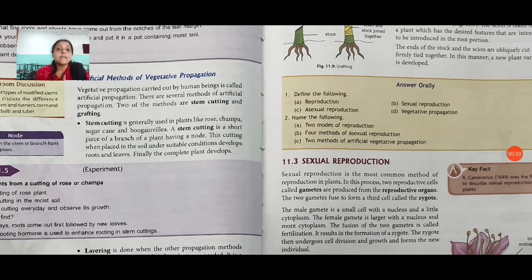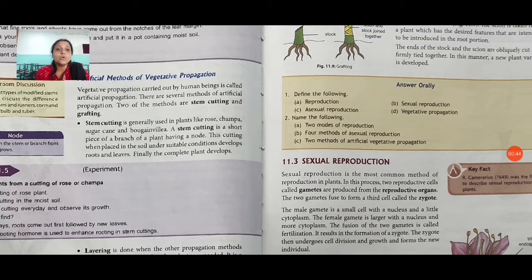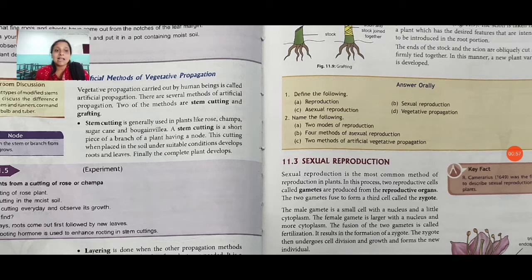The male gamete is a small cell with a nucleus and little cytoplasm. The female gamete is large, with a nucleus and more cytoplasm. The fusion of the two gametes is called fertilization, which results in the formation of a zygote. The zygote then undergoes cell division and growth and forms a new individual.